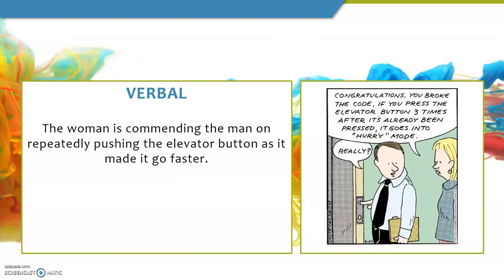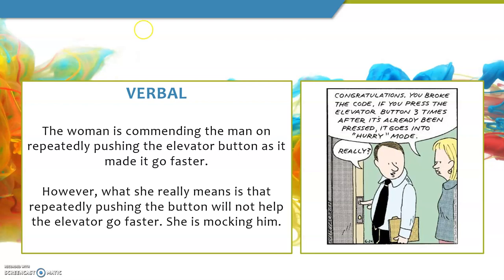In this context, the woman appears to be complimenting the man — saying he's doing a good job because pushing the button repeatedly makes the elevator go faster. What she actually means is that she's mocking him; she's saying you can push the button as much as you want but it's not going to make the elevator go any faster. She's saying the opposite of what she means. There'll be a note later in this video about sarcasm, because you're probably thinking — isn't she being sarcastic? We'll deal with that in a little bit.